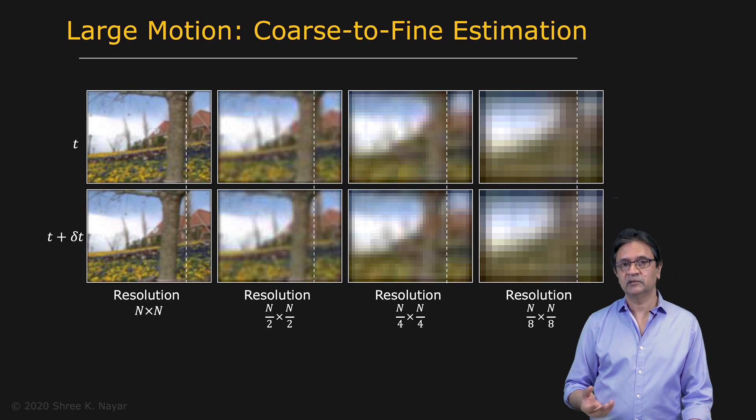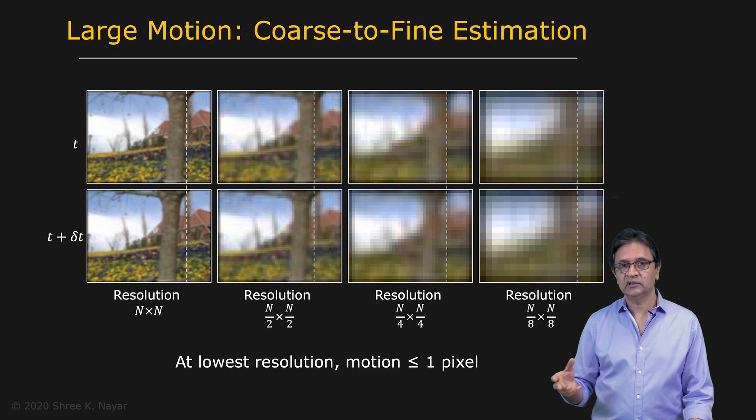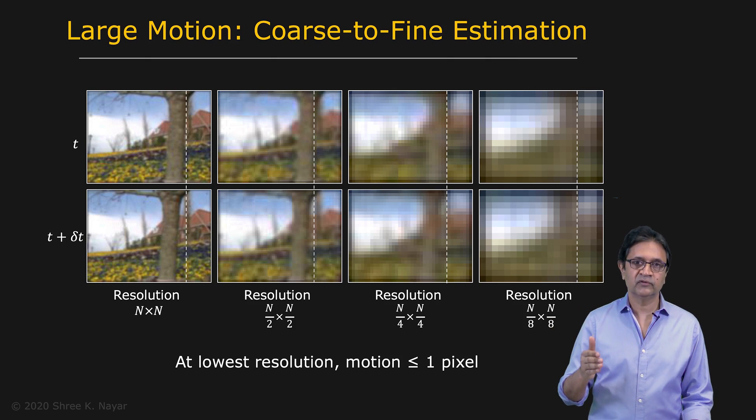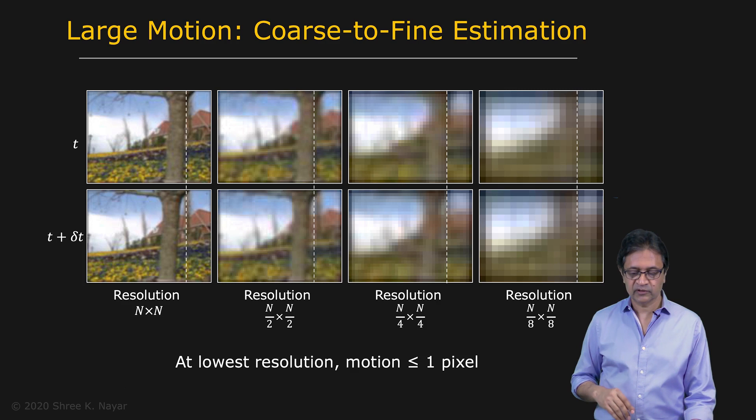all motions are going to be less than a pixel in magnitude. And if that is the case, now at that resolution, that very low resolution, your optical flow constraint equation becomes valid again. So that's the key observation.